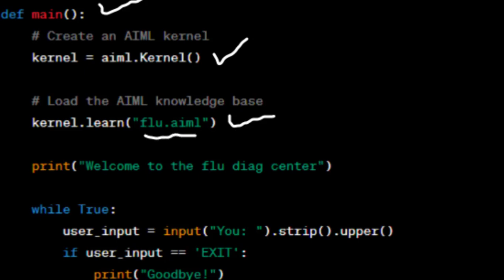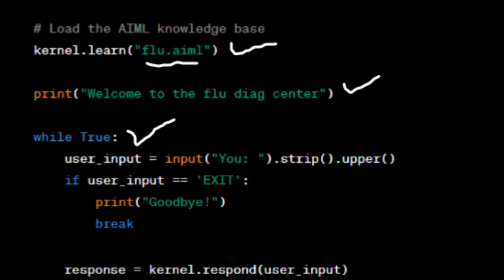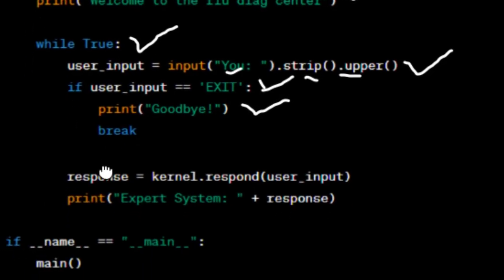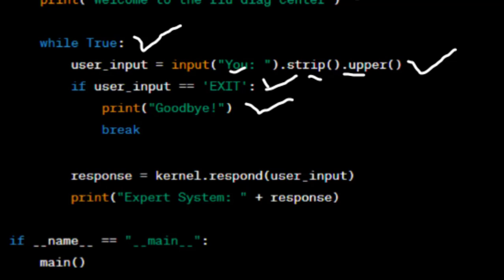The next line loads the AIML knowledge base — if the file is stored in a specific location, we need to specify the full path instead of just 'flu.aiml'. Then a welcome message is printed to the console. An infinite loop is started which continues until the user decides to exit. The user is prompted to enter input, and strip() removes leading/trailing whitespace while upper() converts it to uppercase to match AIML patterns. If the user types 'exit', the program prints 'Goodbye' and exits the loop.